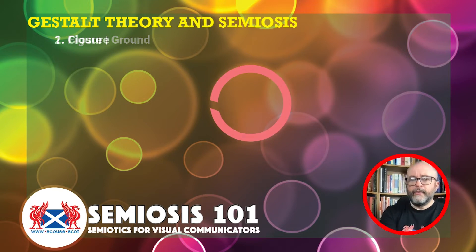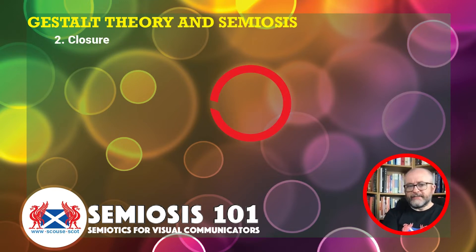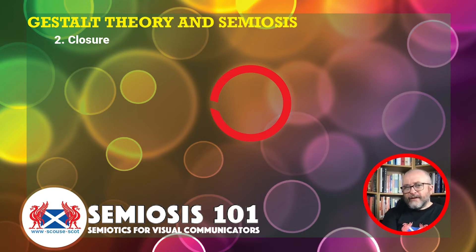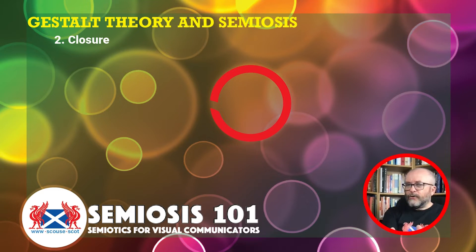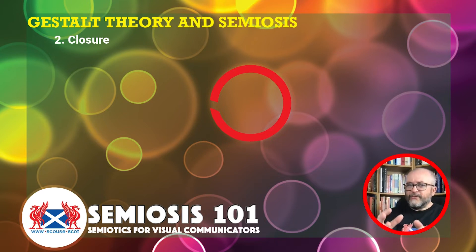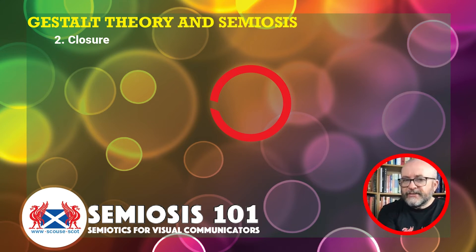Moving from figure and ground to closure — I've coloured that circle red, and you've probably already noticed that I refer to it as a circle but it's not a complete circle; it's a circle with a gap. Because I already mentioned the word 'circle,' you've been doing gestalt yourself — making a closure, seeing a circle rather than a circle with a gap. That's closure: the eye can jump that gap to make it feel like a full circle, even though it's essentially a curved line that doesn't meet.